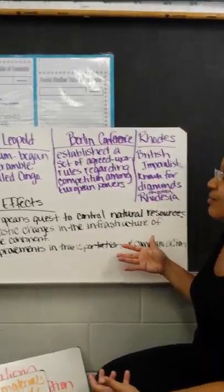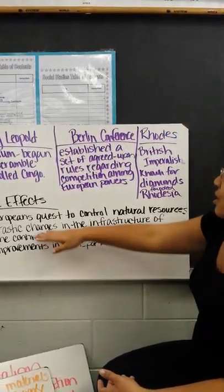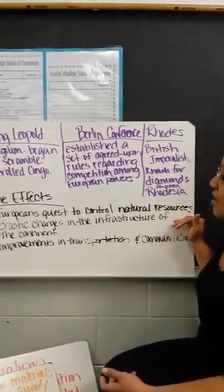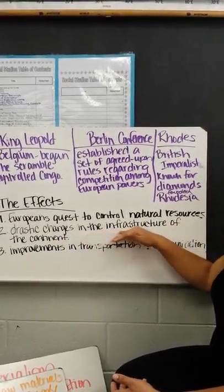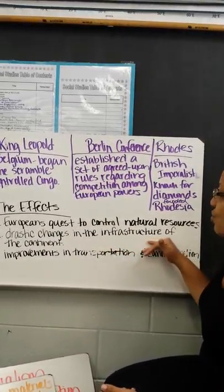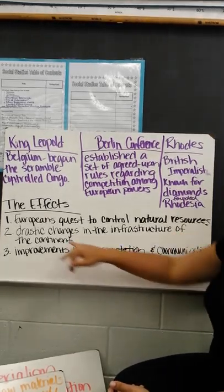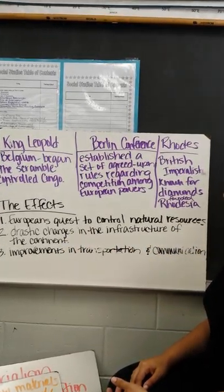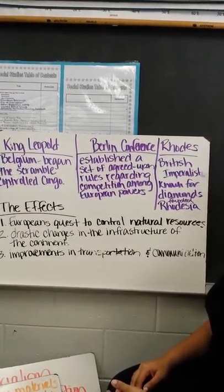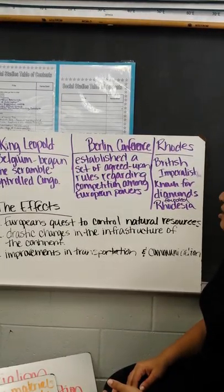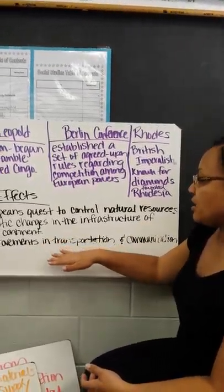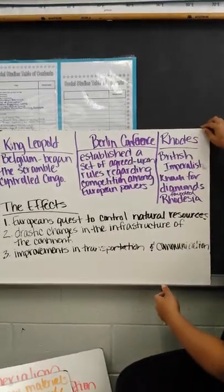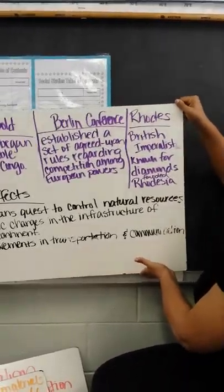What are going to be the effects of the Scramble for Africa? You're going to have European quest to control the natural resources coming from Africa. You're going to have drastic changes in the infrastructure — meaning roads, buildings, and highways of the continent. You're also going to have improvements in transportation and communication, because now you have roads and it's easier for people to talk to each other.